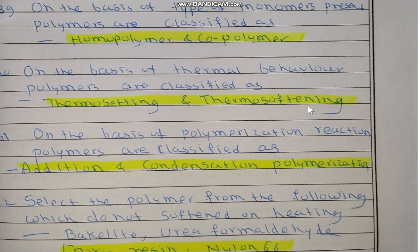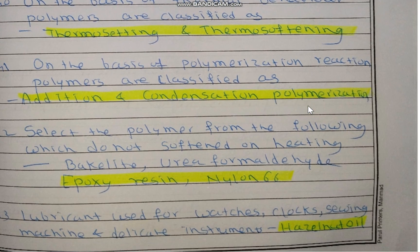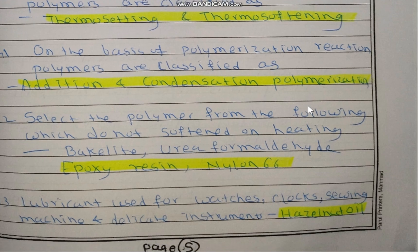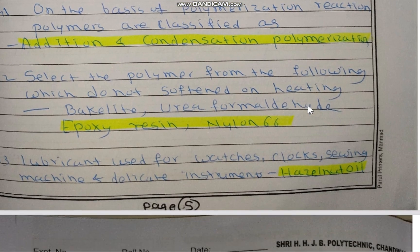On the basis of thermal behavior, polymers are classified as thermosetting and thermosoftening. Thermosoftening plastics are also known as thermoplastics. On the basis of polymerization reaction, polymers are classified as addition polymerization and condensation polymerization.